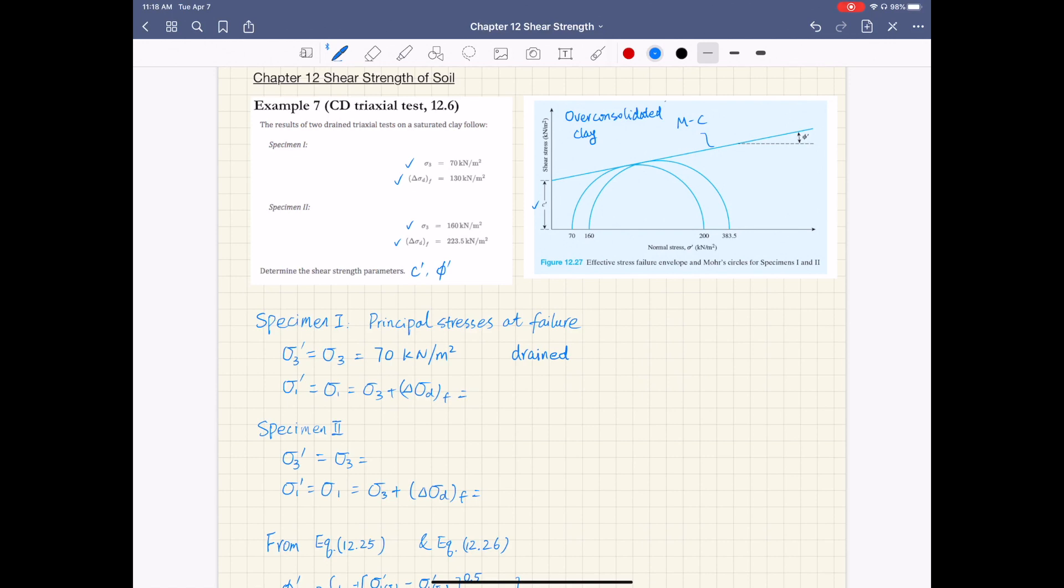And then the major principal stress, sigma 1 prime equals sigma 1 equals sigma 3 plus the deviator stress at failure. So this is 70 plus 130, and that's 200 kN per meter square, or kPa.